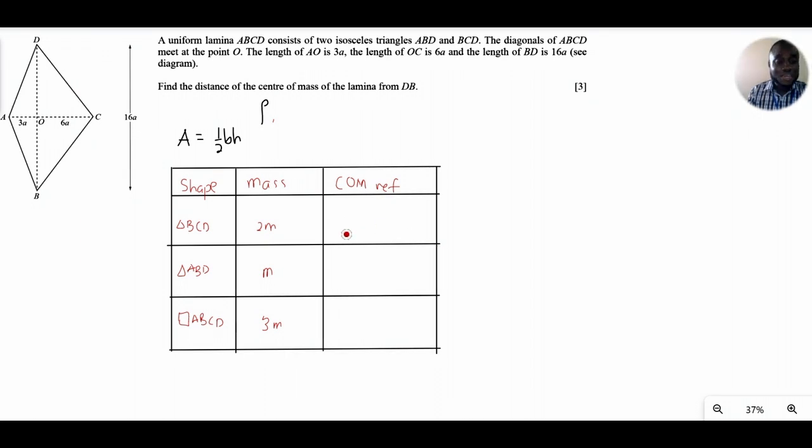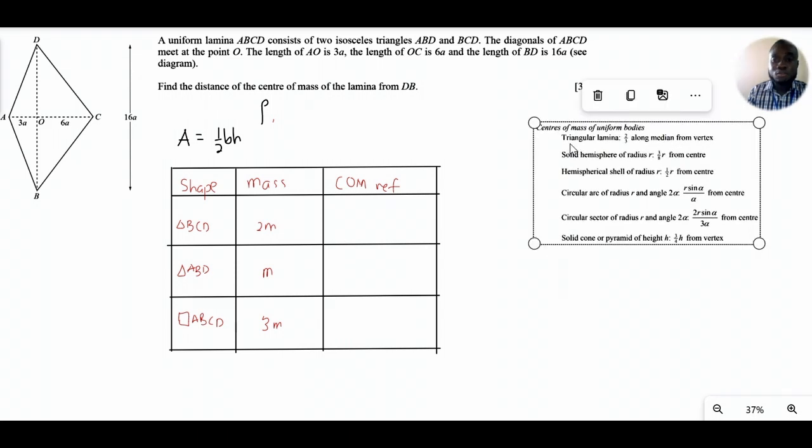As you can see from your MF19 booklet, the center of mass of a triangular lamina is two-thirds along the median from the vertex. So for this triangle, the line from C that bisects BD is that median for that particular triangle, and so two-thirds along this line from the vertex, or one-third along this line from the base, would give us a location of the center of mass from our reference point O. So that's just going to be 2a.